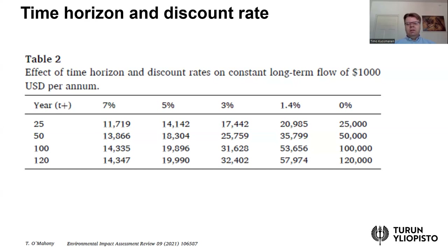This illustrates how big an impact a very high discount rate has on the net present value, and also how the time horizon matters — especially in long-term projects like railroad projects. The time horizon can be potentially very long; even 120 years might be a relatively short time span for a railway investment.